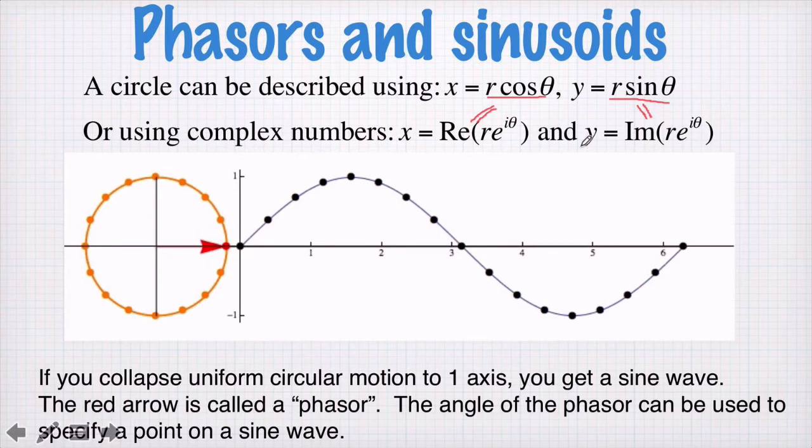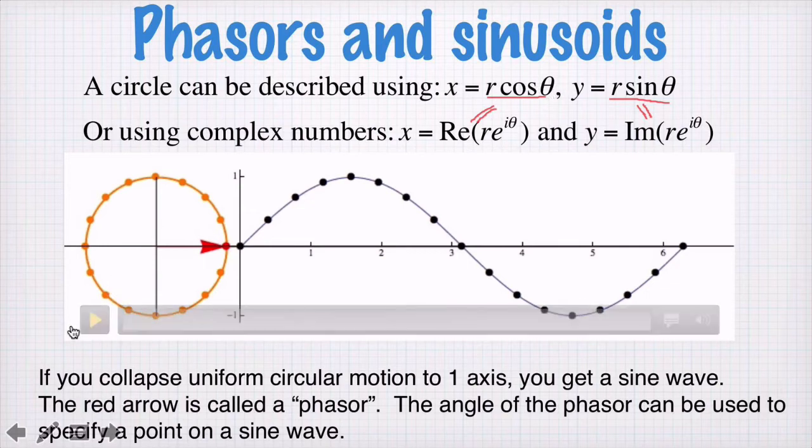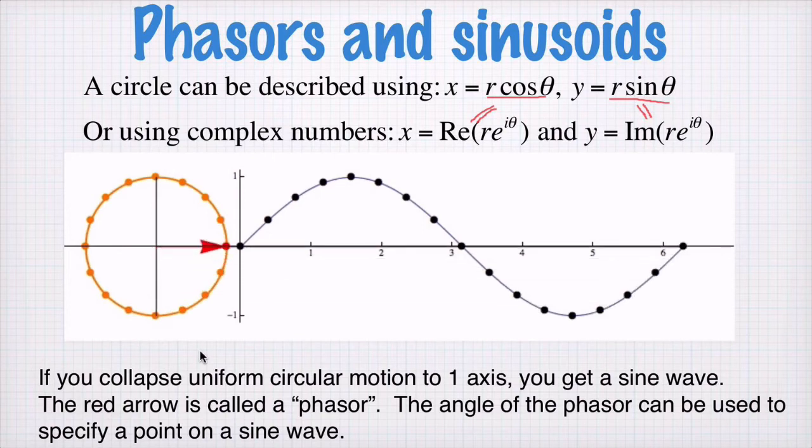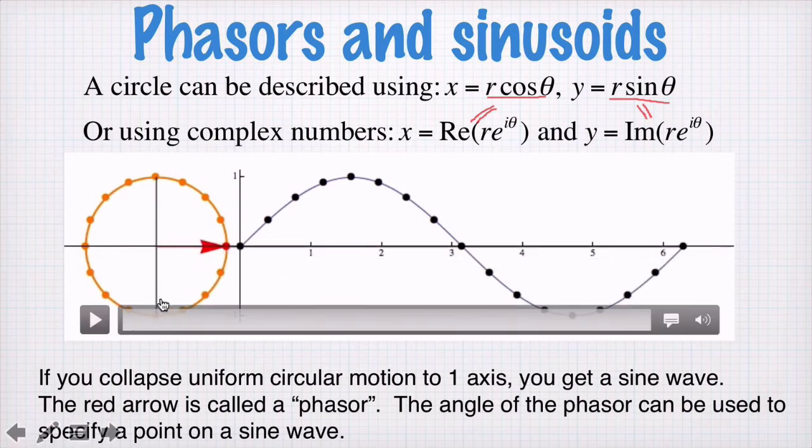So now let's graph what happens when we change theta. So here's an animation here. So theta is increasing. This red arrow is the parametric equation of the circle as I increase theta. And I'm plotting out x in this direction and y in this direction.